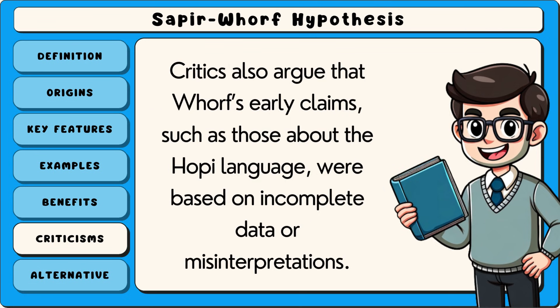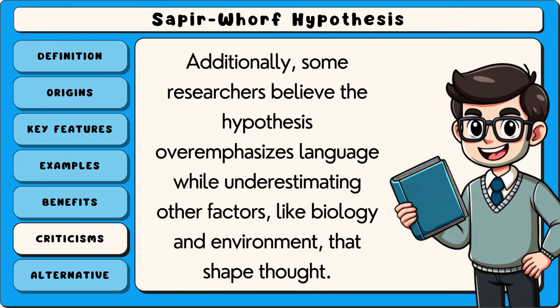Critics also argue that Whorf's early claims, such as those about the Hopi language, were based on incomplete data or misinterpretations. Additionally, some researchers believe the hypothesis over-emphasises language while underestimating other factors, like biology and environment, that shape thought.